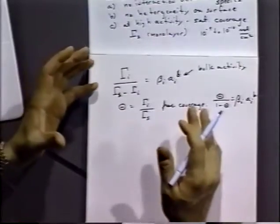If we rearrange, the isotherm looks like: fractional coverage over one minus the fractional coverage equals beta_i times alpha_i times beta. That just gives you how much is adsorbed as a function of activity. If we have a high enough activity or high enough surface adsorption free energy, we'll get complete coverage. If the number is small, we'll get some fractional amount that depends on the activity of material in solution. You get a sigmoidal shape for the Langmuir isotherm.